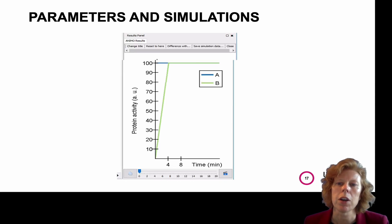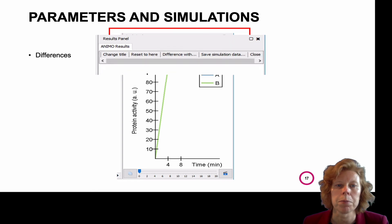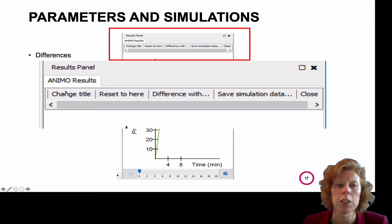Okay, on the results panel, there are other things you can change. You can change the title of the Animo results to a name that indicates what you simulated. For example, so here change the title. For example, FGF at 50. That way, if you perform many simulations, you will be able to go back to any of them and know what the simulation was for.